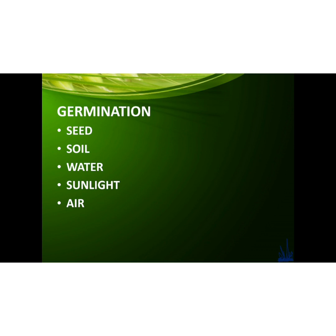You need these five elements for germination — a seed needs: first, a seed; second, soil; third, water; fourth, sunlight; and fifth, air.